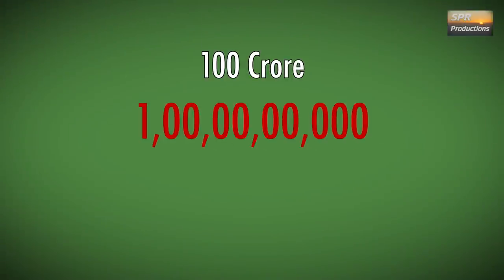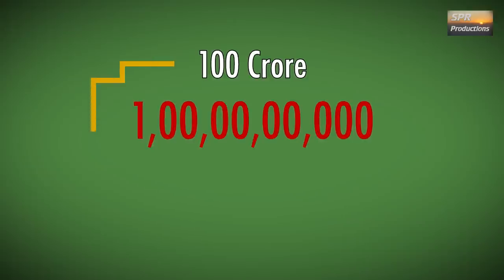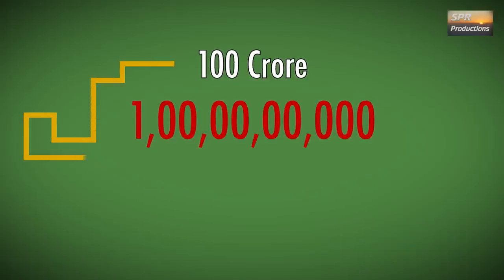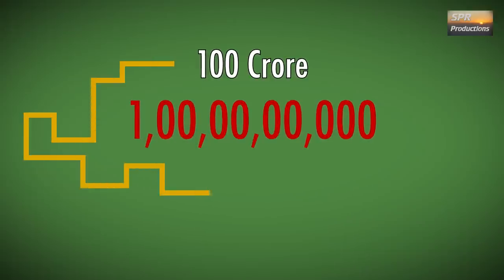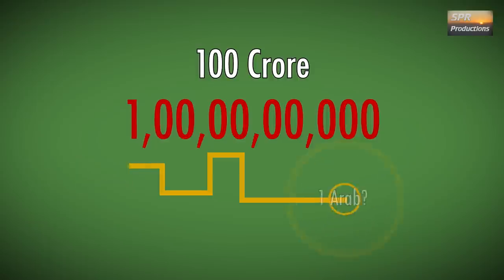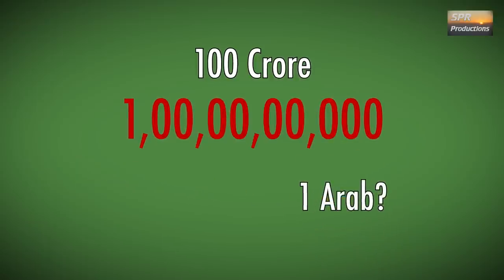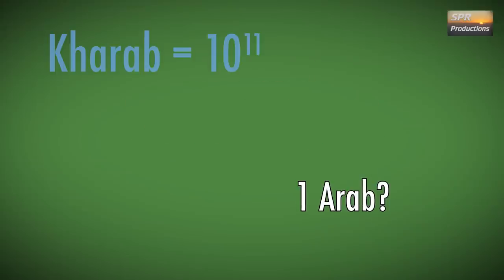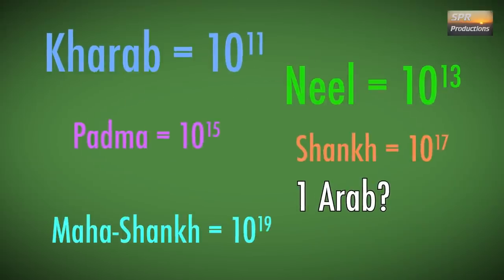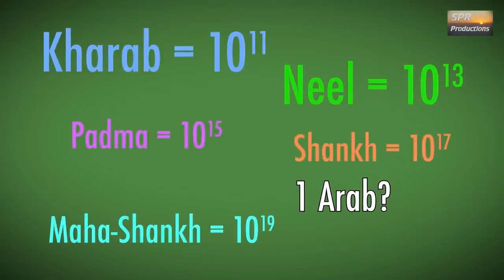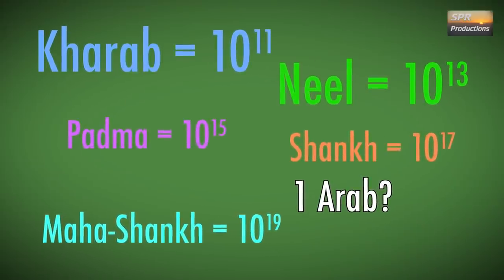At the 100 crore mark, this system gets a little more confusing. Based on the Indian numbering system, 100 crores should be labeled as 1 Arab. In fact, the Indian numbering system has unique names for each 10 to the power 2 increase, but we seem to have abandoned them in our day-to-day use.